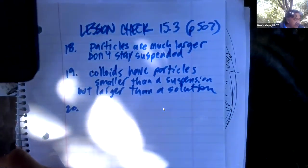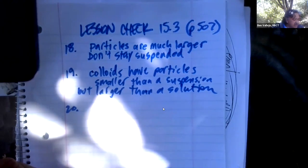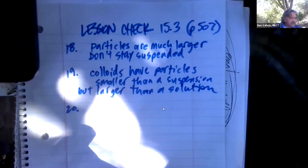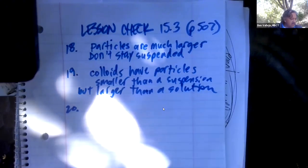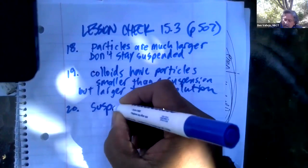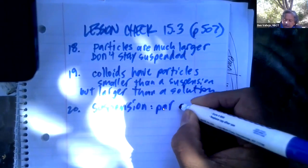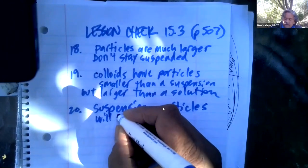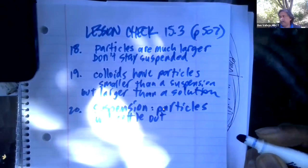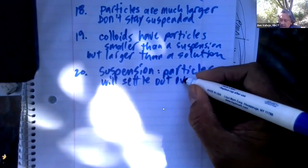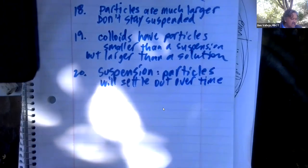Number 20: how can you determine through observation that a mixture is a suspension? It has to do with the settling. If it's a suspension, it'll settle out; if it's a solution, it'll stay that way. If it's a suspension, the particles will come out and settle over a period of time — might be an hour, might be five minutes, might be a day. It just depends on the suspension.